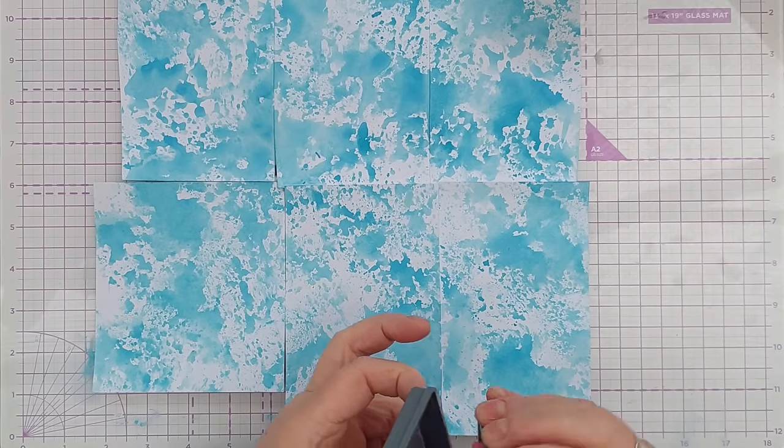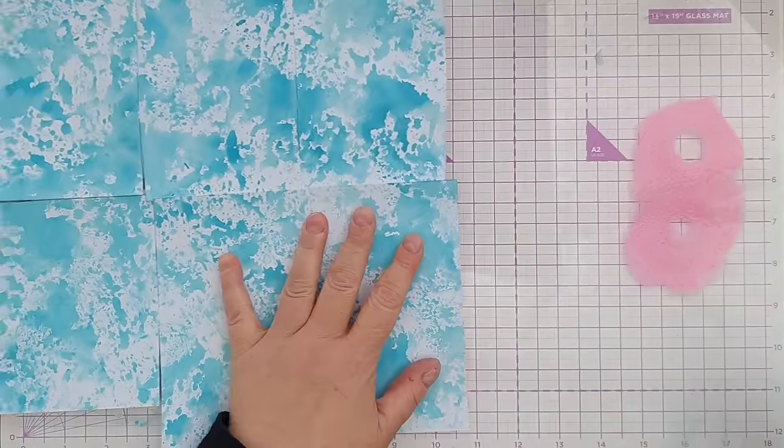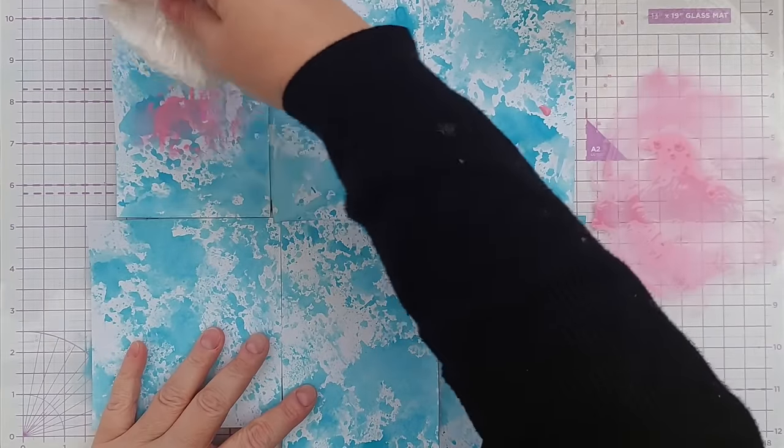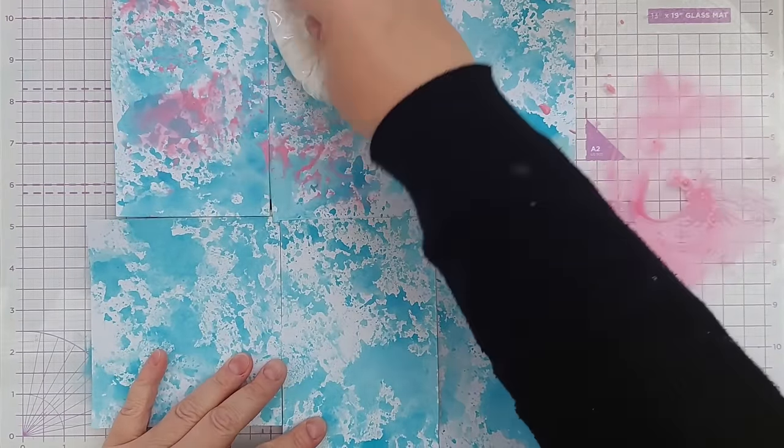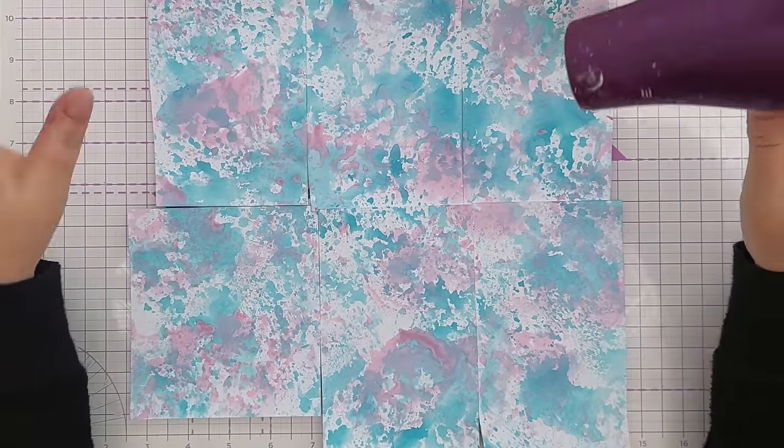Next I'm going to smush on some Kitsch Flamingo. I did wipe my smosher between colors. Okay that's done, I'll dry that again.